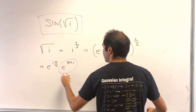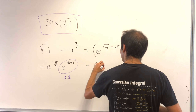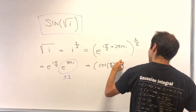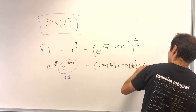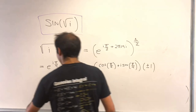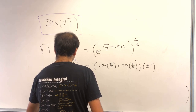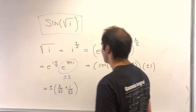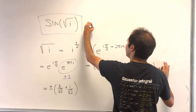For e^(i·π/4), also use cosine plus i sine: so this is cosine of π/4 plus i sine of π/4, times plus or minus one. In the end this gives you plus or minus 1/√2 + i/√2. So this is square root of i, and we need to calculate sine of that.